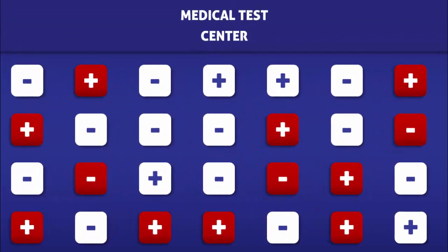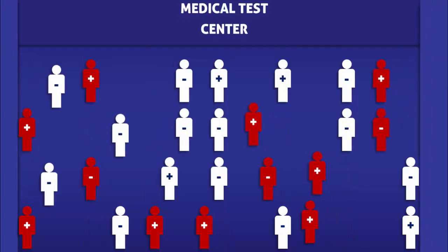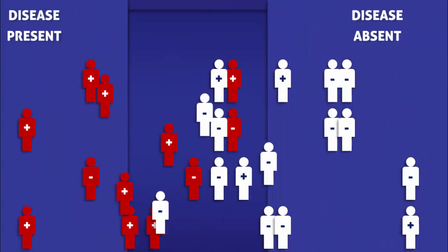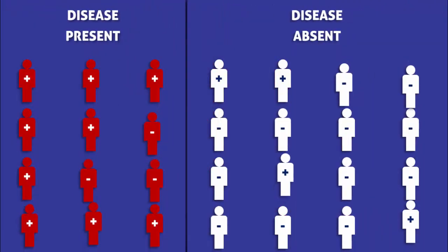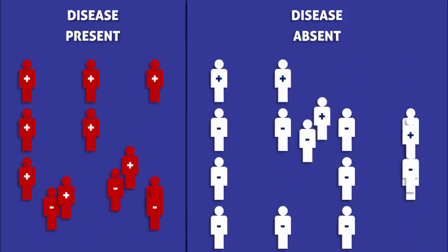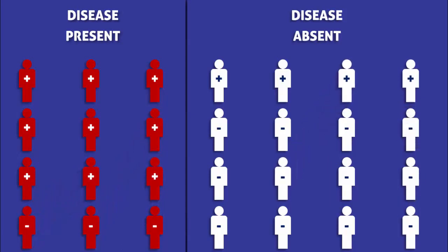To help us learn how to calculate the odds ratio, we are going to imagine that a group of people were exposed to a risk factor. The red character icons represent those who have the condition and the white icons represent those who don't. The plus sign represents those who were exposed to a risk factor and the minus sign represents those who weren't.